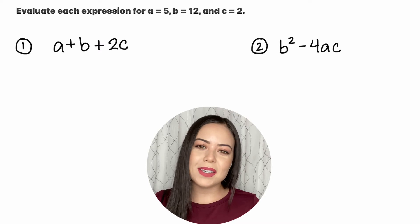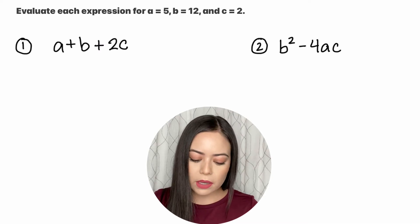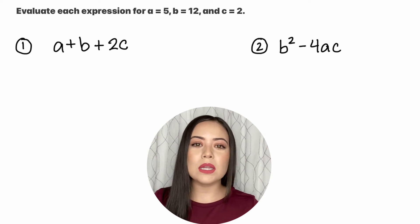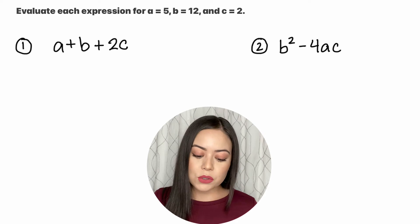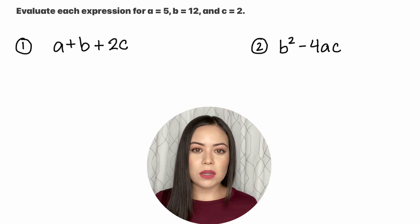Let's read the directions together for questions one and two. It says evaluate each expression for a equals 5, b equals 12, and c equals 2. So what that means is you want to be plugging in those specific values into those terms A, B, and C to figure out what our final answer is going to be.